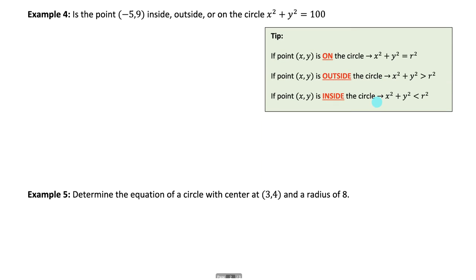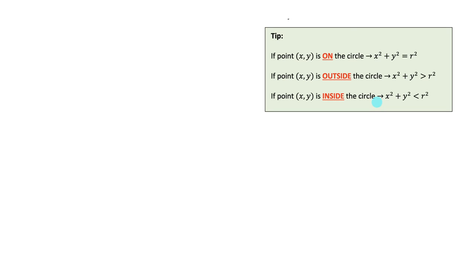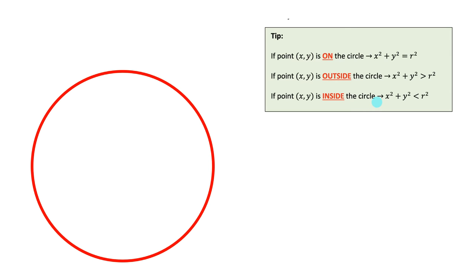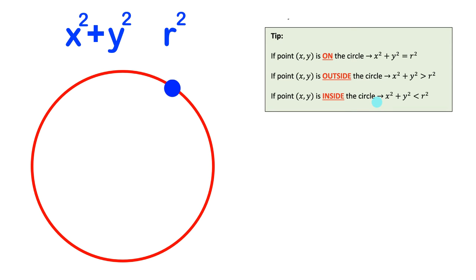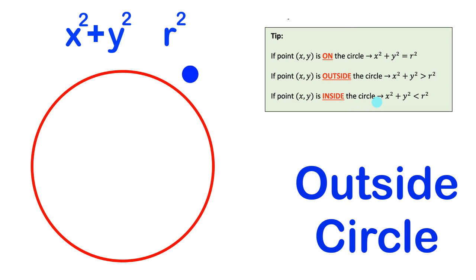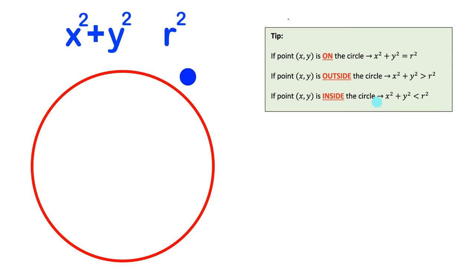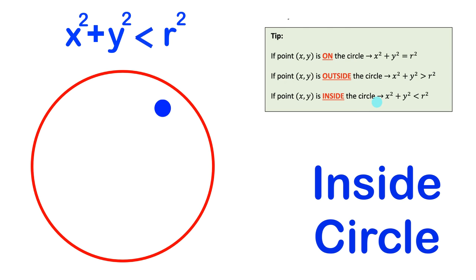The next question asks whether a point lies inside, outside, or on a specific circle. The general rule: if the XY point is on the circle, then x squared plus y squared equals r squared. If the point is outside the circle, then x squared plus y squared is greater than r squared. If the point is inside the circle, then x squared plus y squared is less than r squared.